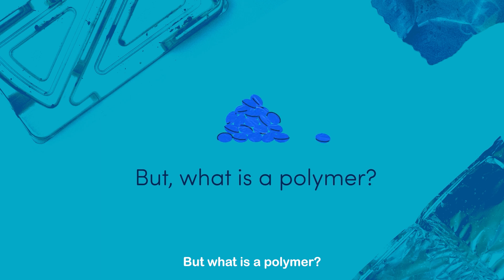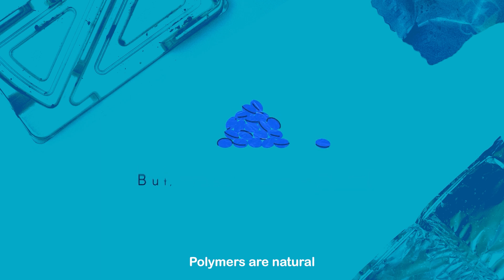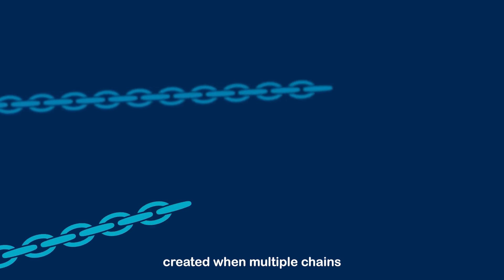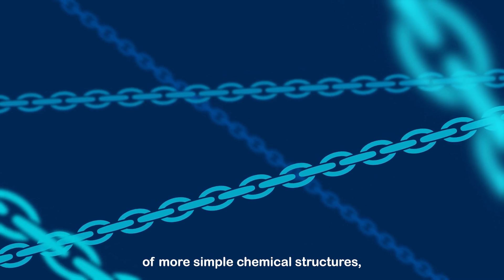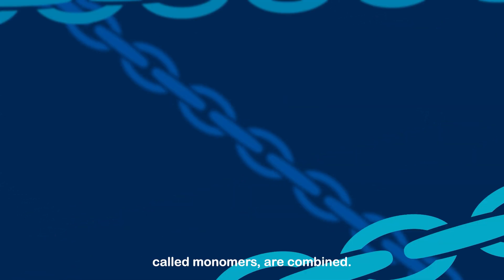But what is a polymer? Polymers are natural or synthetic materials created when multiple chains of more simple chemical structures called monomers are combined.